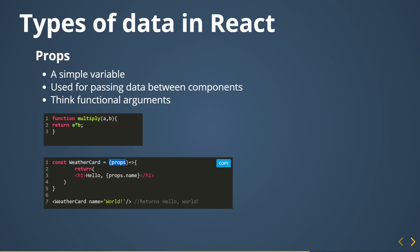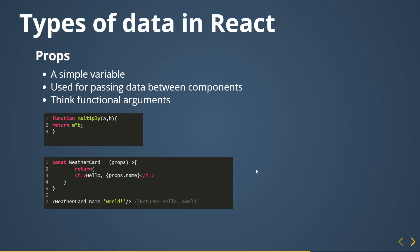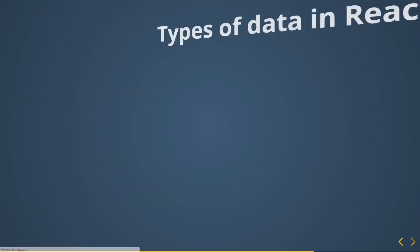Props are like functional arguments. If you have a function called multiply with arguments a and b returning a times b, it's the same idea. You can write 'const WeatherCard = (props) => { return Hello {props.name}; }'. Props is an object with properties like name. When you call that component you do '<WeatherCard name="world" />' and it returns 'Hello world'. Props are simple variables used for passing data between components.